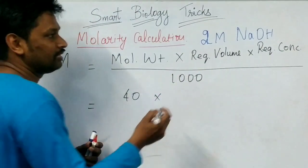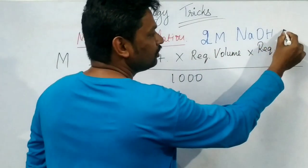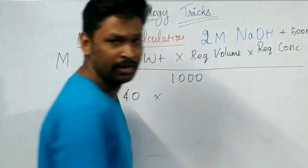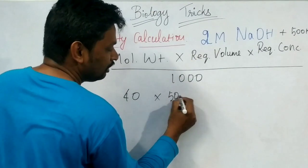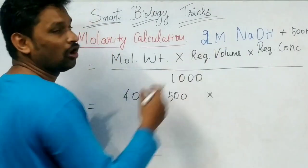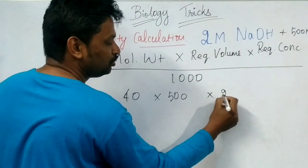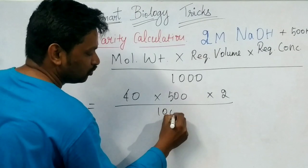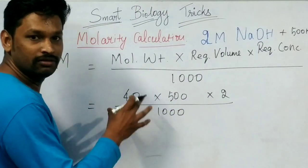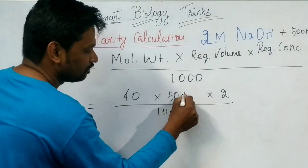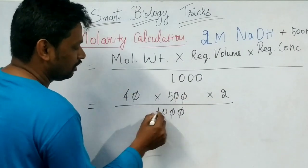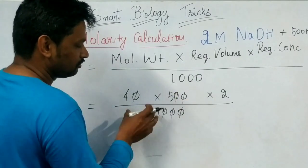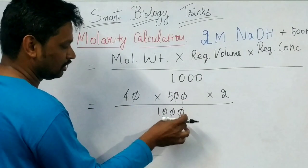For example, 2 molar NaOH we have to prepare for 500 ml — that means half a liter. The numerical value you put for required volume, and the required concentration is 2. The value should be divided by 1000. We simplify the values and we will remove all the zeros based on the numbers.